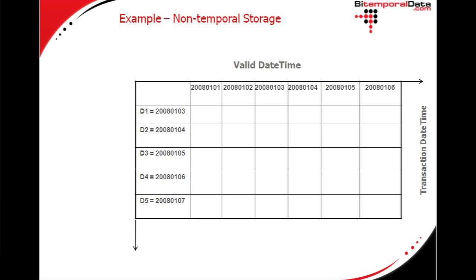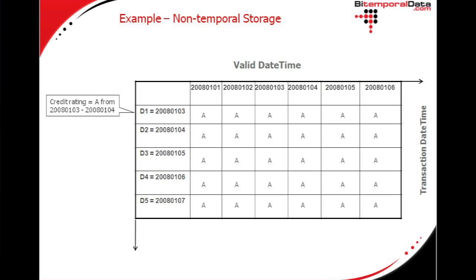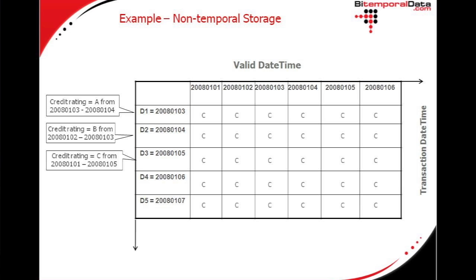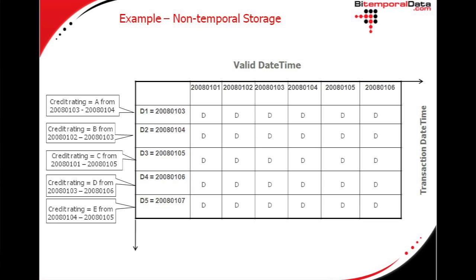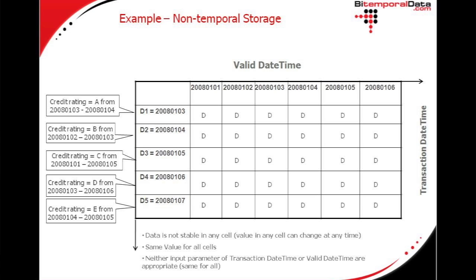Lastly, non-temporal storage. For the first event, it's A for the entire matrix because we don't have sensitivity to the transaction dimension of time or the valid dimension of time. We don't act on corrections like the credit rating being B on the third — that's stale information; we already know it was A. Events D and E similarly overwrite everything. No cell in the matrix is stable; we have the same value for all cells, so there's no input parameter — neither valid date-time nor transaction date-time — that makes sense to query against this data.